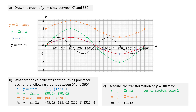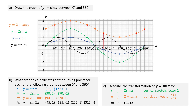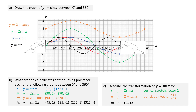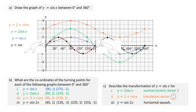Now consider the transformation which maps y equals sine x onto y equals 2 plus sine x. Here, each point on y equals sine x moves 2 units vertically upwards, so the transformation is a translation with vector (0, 2). For the transformation mapping y equals sine x onto y equals sine 2x, the graph is squashed horizontally towards the y-axis. Since y equals sine 2x has two complete cycles between 0 and 360 degrees, the transformation is a horizontal squash of factor 2.